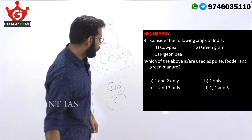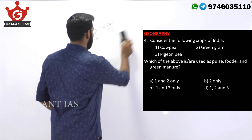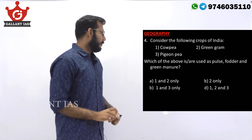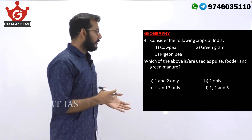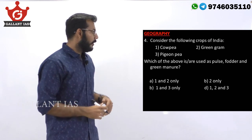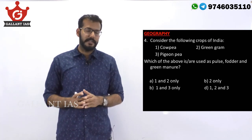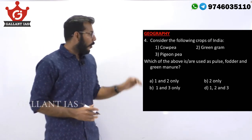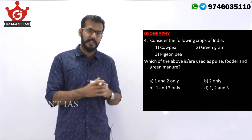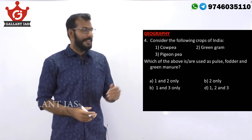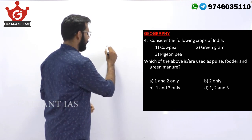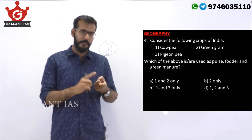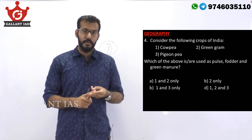The next question is from geography. Consider the following crops of India: cowpea, green gram, and pigeon pea. Which of the above are used as pulse, fodder, and green manure? All three items mentioned are leguminous plants that fix atmospheric nitrogen. All three pulses are used as food, fodder, and also as green manure. So your answer here is D — all of them are used for all three purposes.